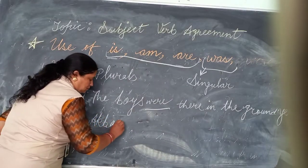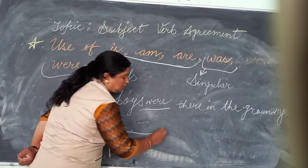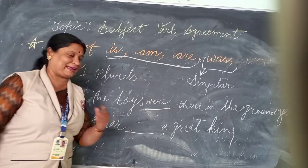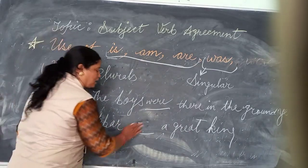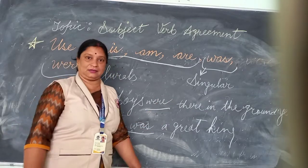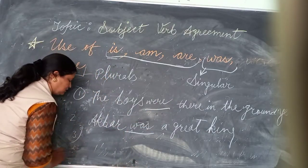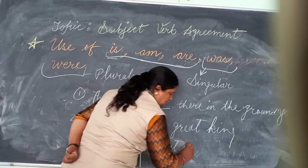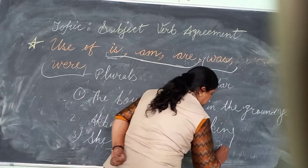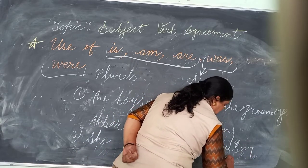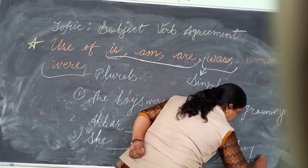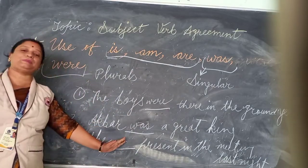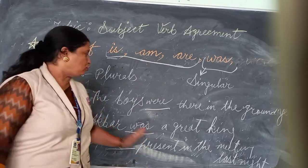Like this example: Akbar ___ a great king. We are talking about a king from the past, so we use was. Akbar was a great king. Another example: she ___ present in the meeting last night. Last night indicates we are talking about the past, so it will be: she was present last night.